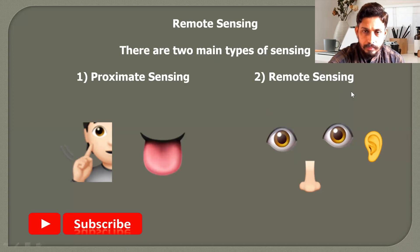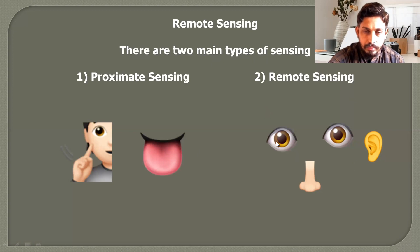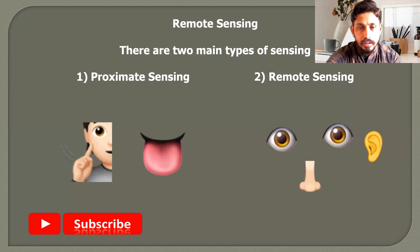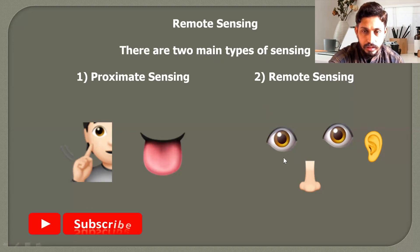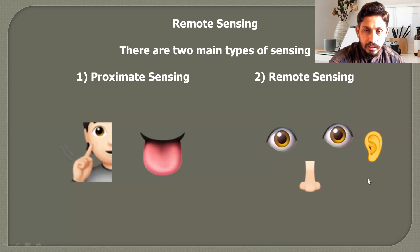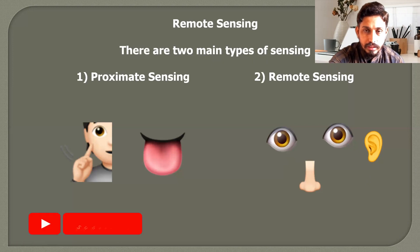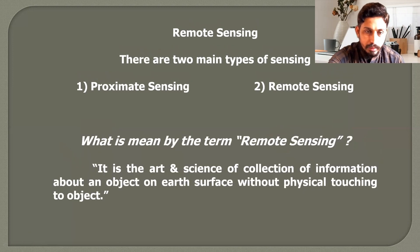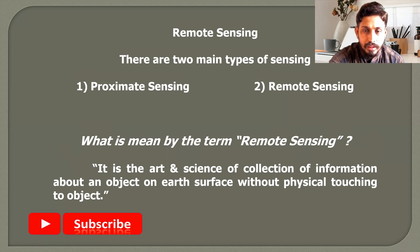We are also doing remote sensing through our eyes, nose, and ears. When we see something and, without touching that object, obtain information only by seeing it — that is remote sensing. By smelling something we obtain characteristics of that object; by hearing something we know information about the object. All these are remote sensing. In scientific terms, remote sensing is an art and science of collection of information about an object on the earth surface without touching it.